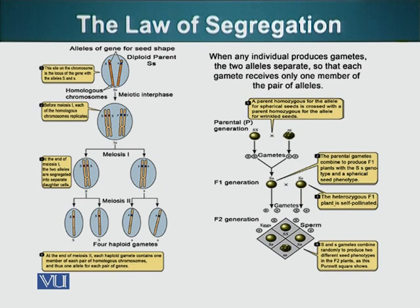Capital S, the smooth seed, is dominant over the recessive wrinkled seed trait. When this plant, capital S small s, is going to make its gametes, we will have meiosis. We know the chromosomes will replicate — they will duplicate. We also know the tetrads will form in meiosis one and the two homologous pairs will separate.